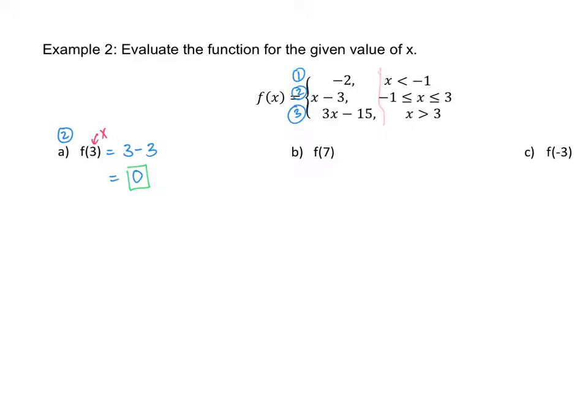The next one we have is f(7). Which one of these says that x can be seven? It's the third one here because seven is greater than three, so we're using the third equation. If I plug that in, that's going to be three times seven minus fifteen, because that's 3x - 15. That seven goes where that x is. If we multiply this out, this would give us 21 - 15 which gives me six, and that is my final answer.